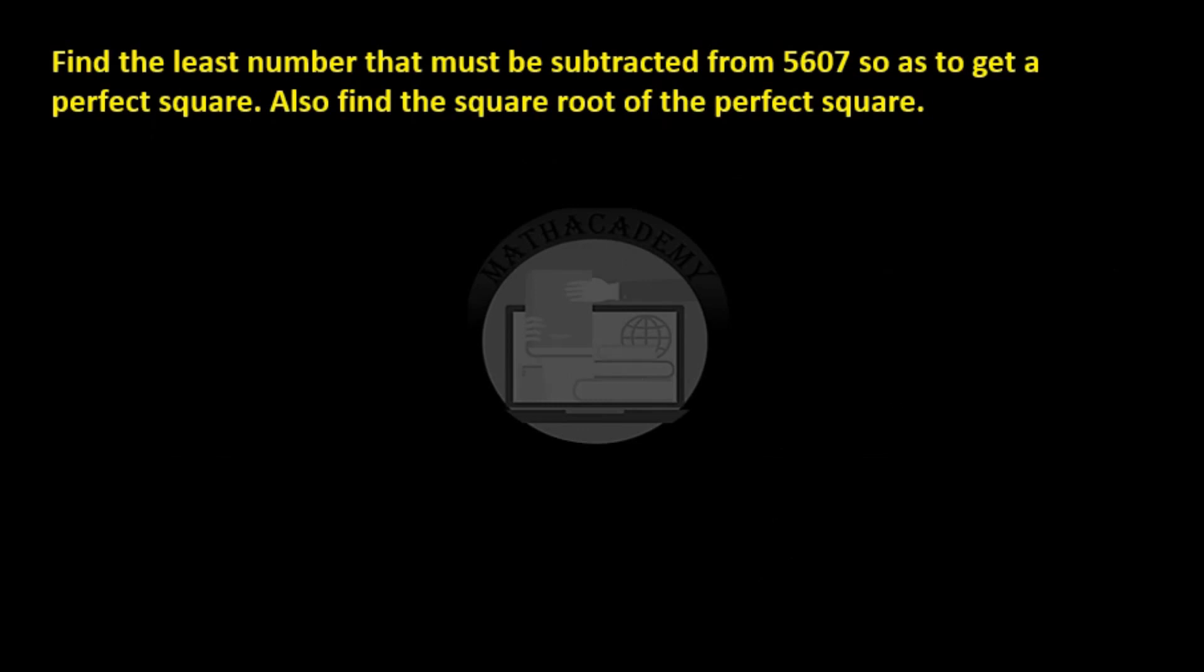Find the least number that must be subtracted from 5607 so as to get a perfect square. Also find the square root of the perfect square number.